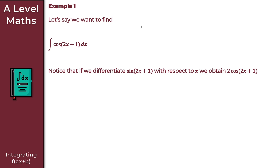Let's take y = sin(2x + 1). As we've already mentioned, if we differentiate sin(2x + 1) with respect to x, we obtain 2cos(2x + 1), so dy/dx = 2cos(2x + 1).